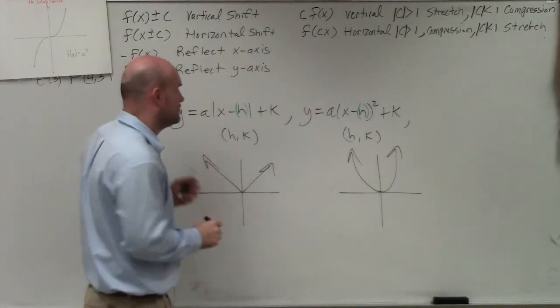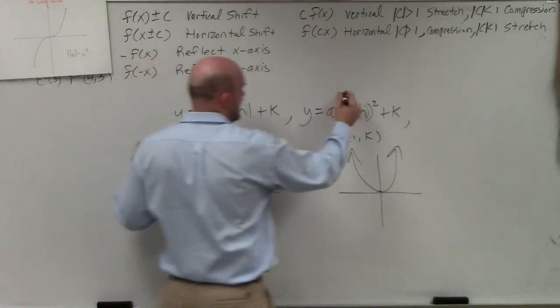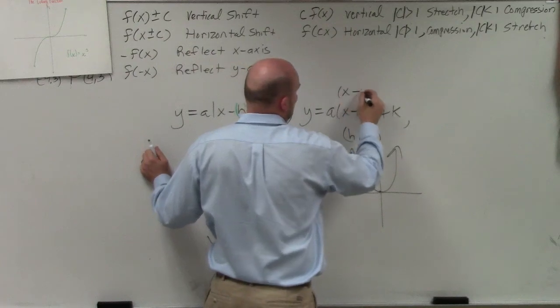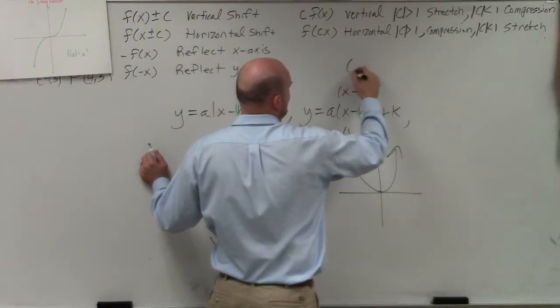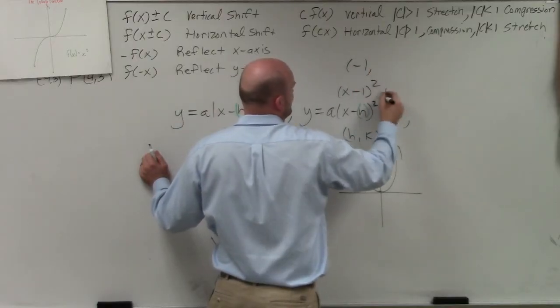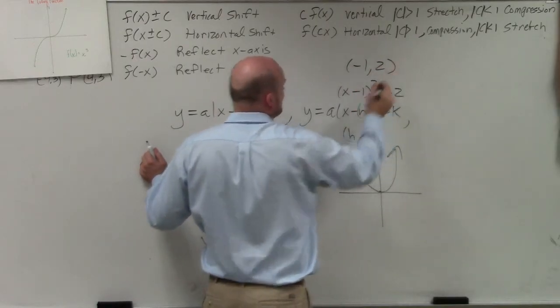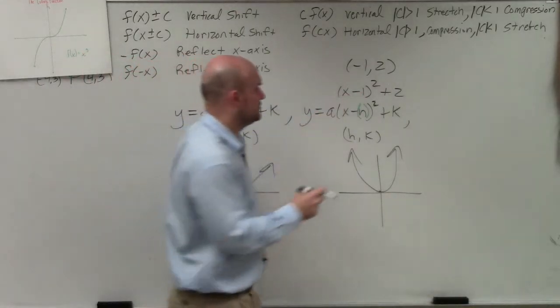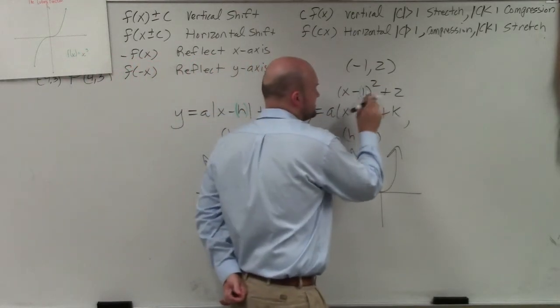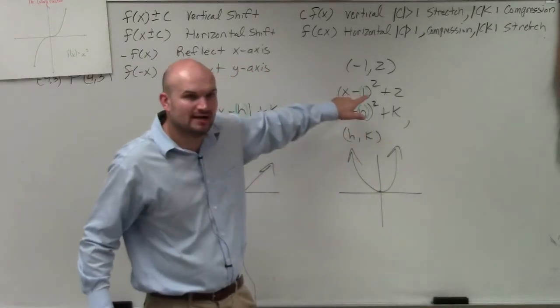Because what gets everybody so confused is when I have x minus 1 squared, everybody wants to say that the vertex is negative 1. And let's say plus 2. Everybody wants to say it's negative 1 plus 2. But remember, that value, you can think of that as inside parentheses. What is that value of 1 inside the parentheses?